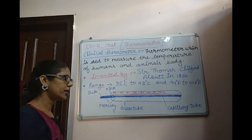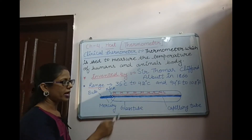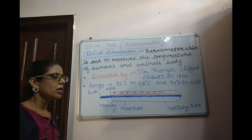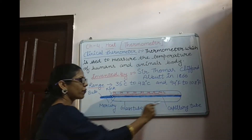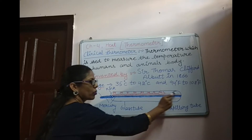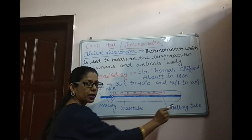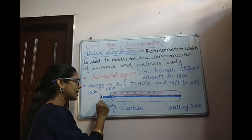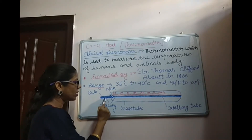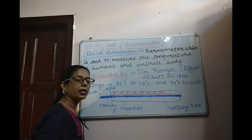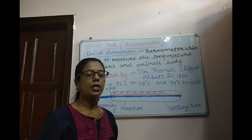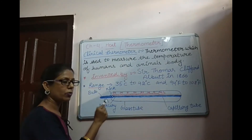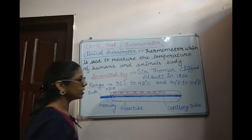Now, the structure of a Clinical Thermometer. You can see in the diagram the structure of a Clinical Thermometer. It is formed of a long and narrow glass tube. At one end of this glass tube, there is a bulb. This bulb is filled with mercury. Mercury is a metal which is liquid at low temperature, and it is filled in the bulb of the Clinical Thermometer.